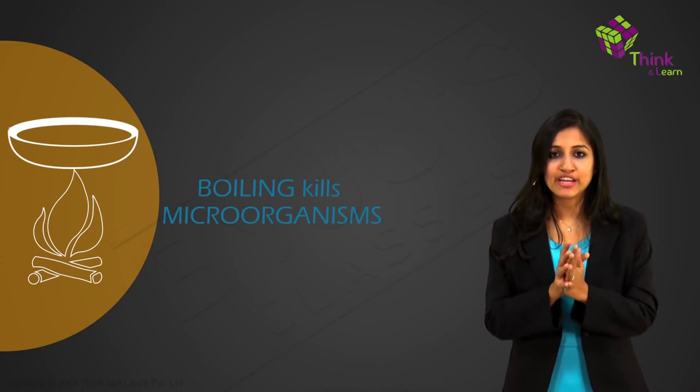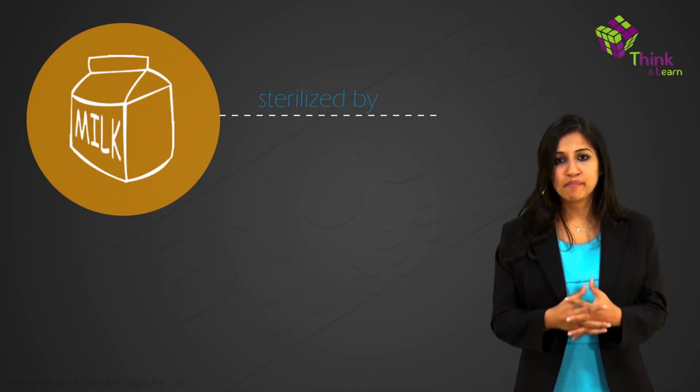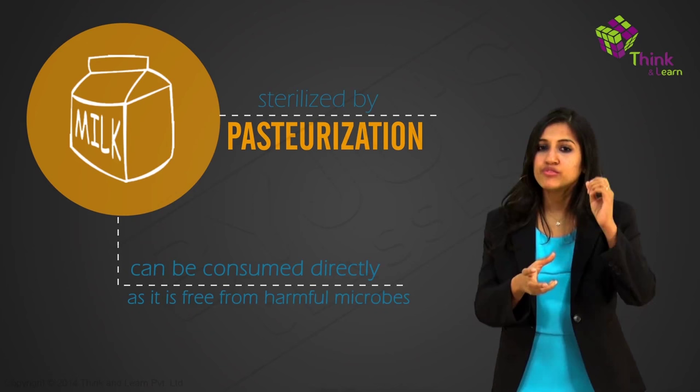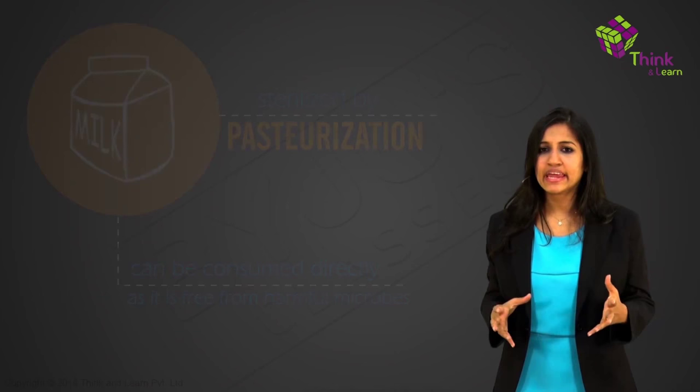And now the milk has boiled and is safe to have, because boiling has killed the microorganisms. The milk packets that you get nowadays are sterilized already by pasteurization. Pasteurized milk can be consumed without boiling as it's free from harmful microbes. So what happens here? The milk is heated to a high temperature, around 70 degrees for 15 to 30 seconds, and then suddenly chilled and stored.